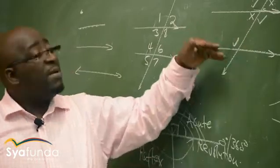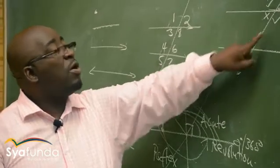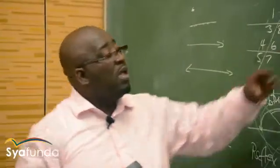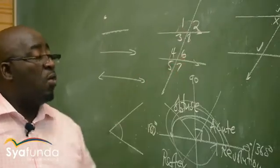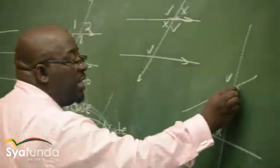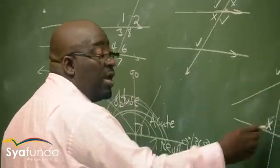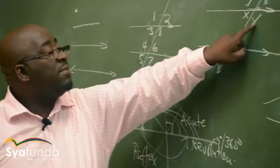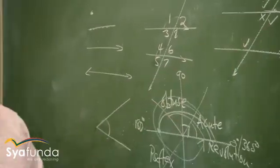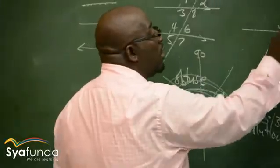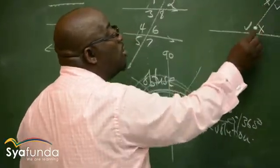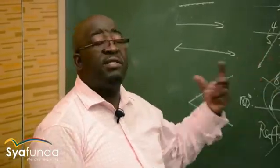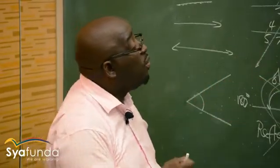The angles that are inside the parallel lines on opposite sides of the transversal are called interior alternate angles. Interior alternate angles are equal if and only if the two lines are parallel. On non-parallel lines, interior alternate angles are not equal. These angle relationships from grade eight and nine form a very important basis for Euclidean geometry.